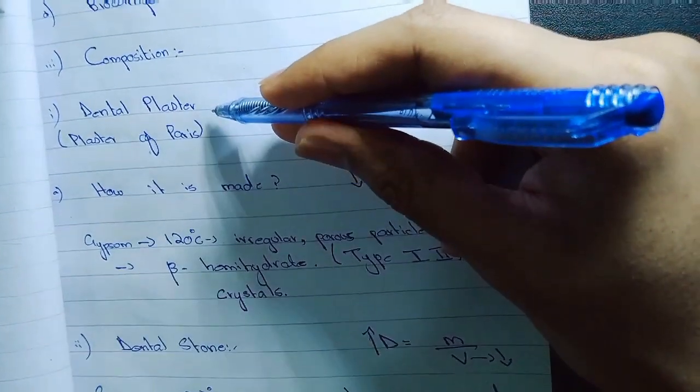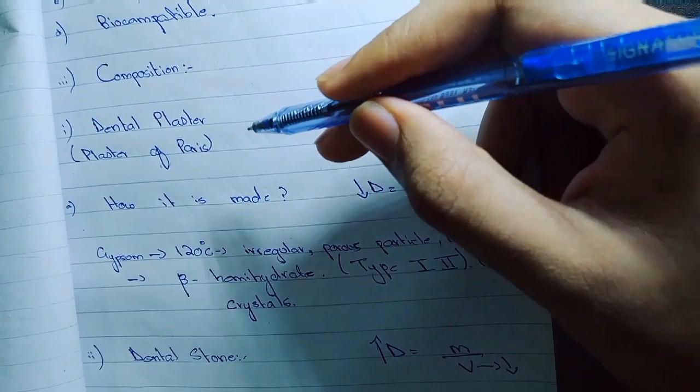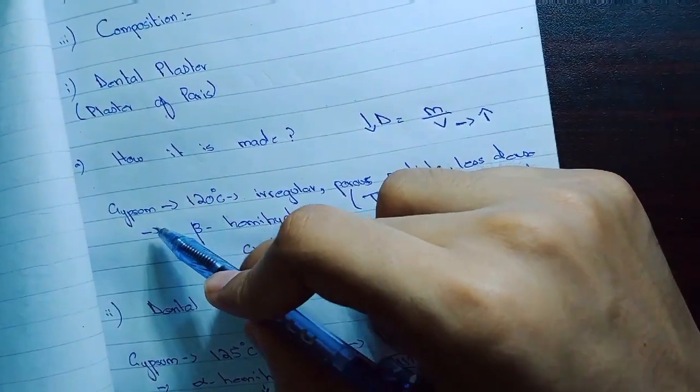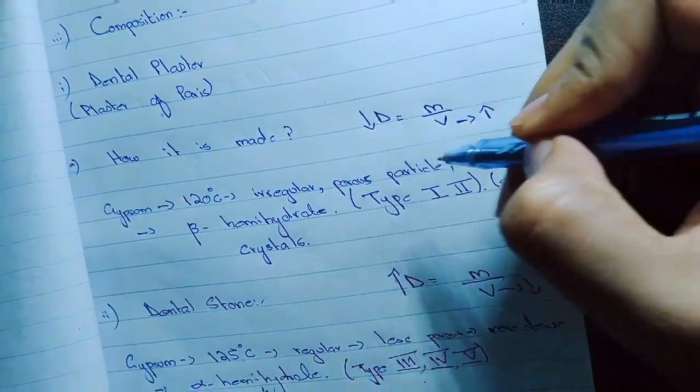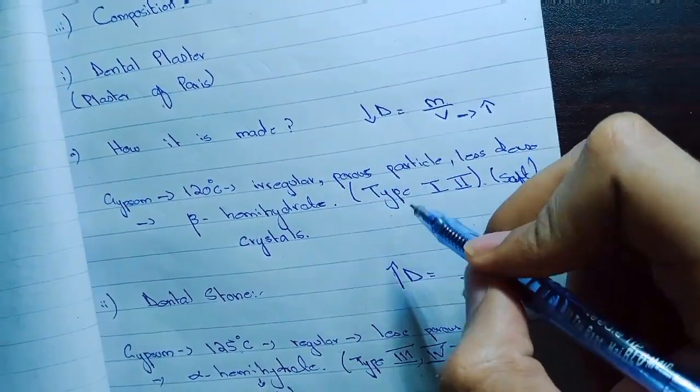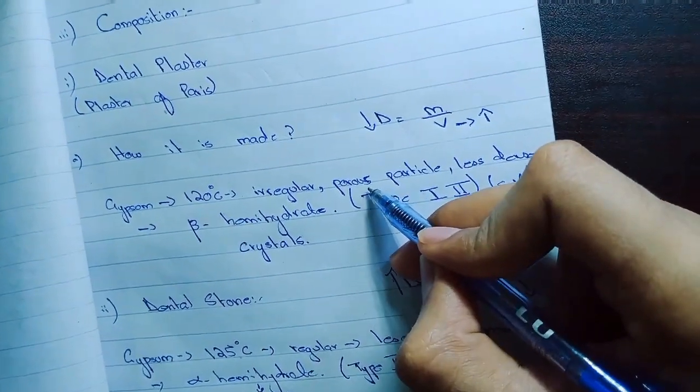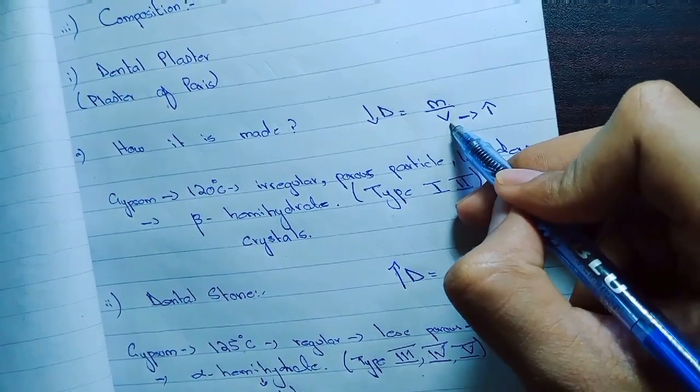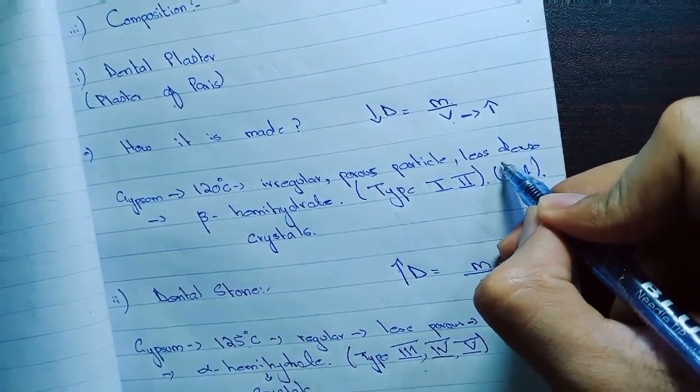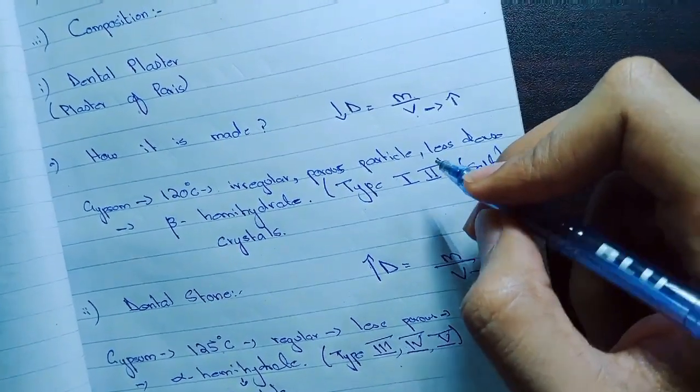Now the dental plaster. Dental plaster is also known as the plaster of Paris. Now how it is made. We heated gypsum at 120 degree centigrade. We get irregular, more porous and less dense particles. We call them the beta hemihydrate crystals. As they are more porous, and we have a formula of density, that density is equal to mass over volume. As the particles are more porous, it takes up more water, so the volume portion rises up and the density goes down. So it is less dense. This is the reason why it is less dense and it is soft. As it is mentioned in the classification, the type 1 and type 2 is the dental plaster.